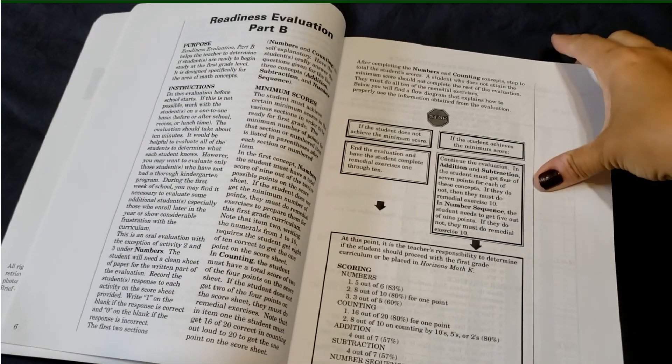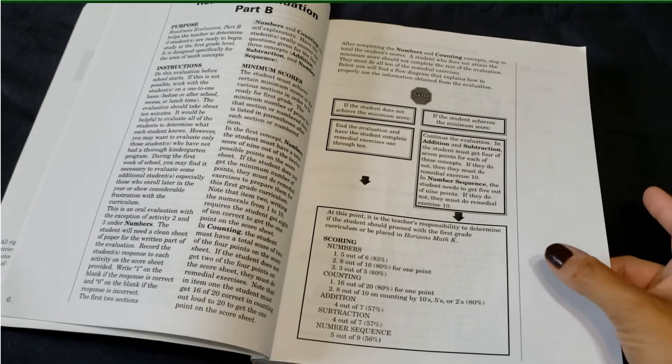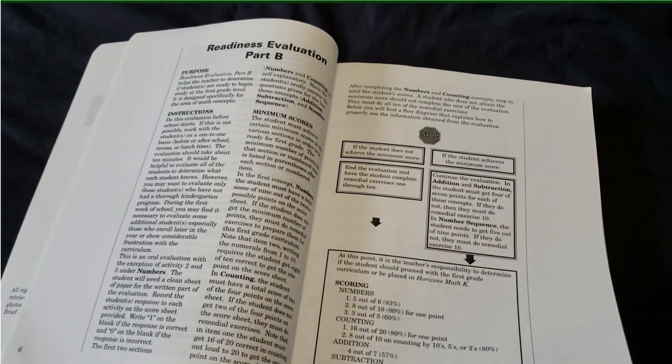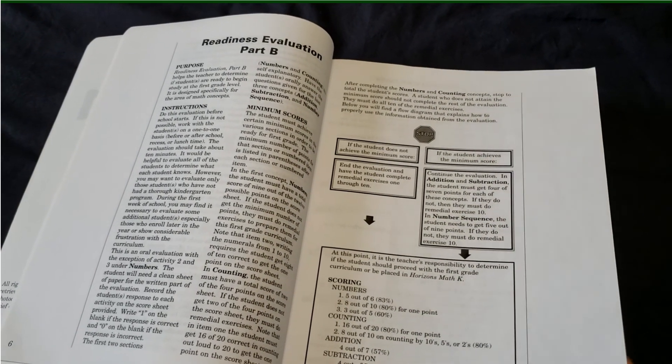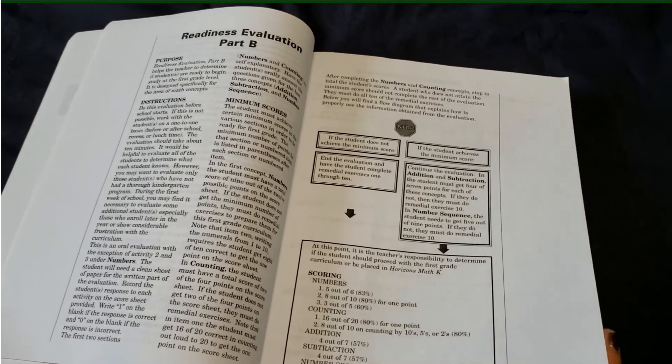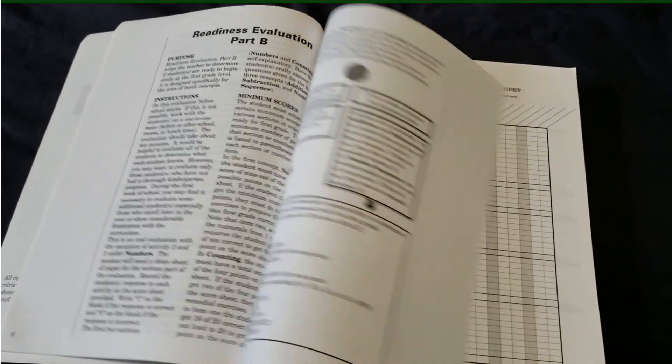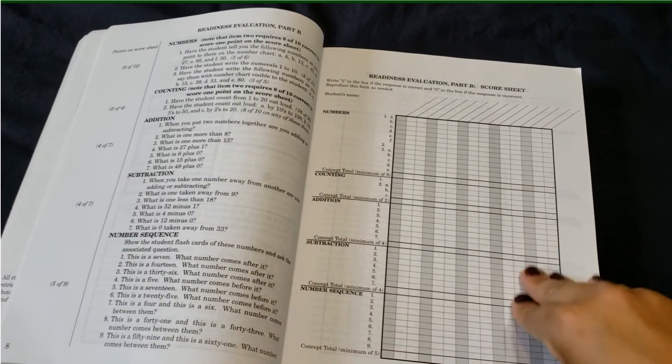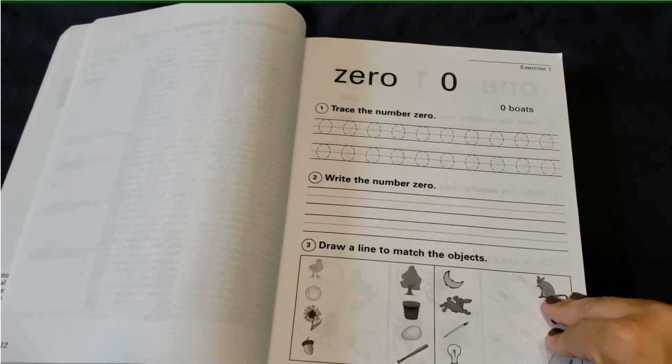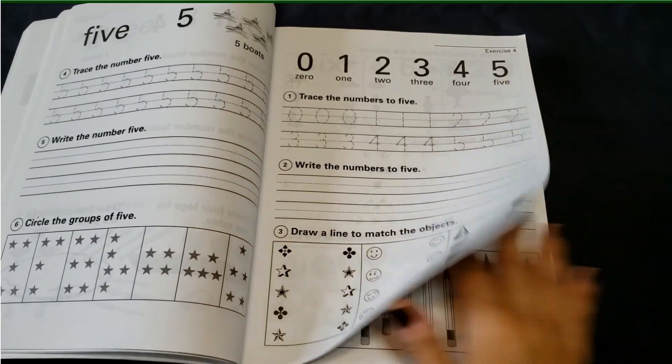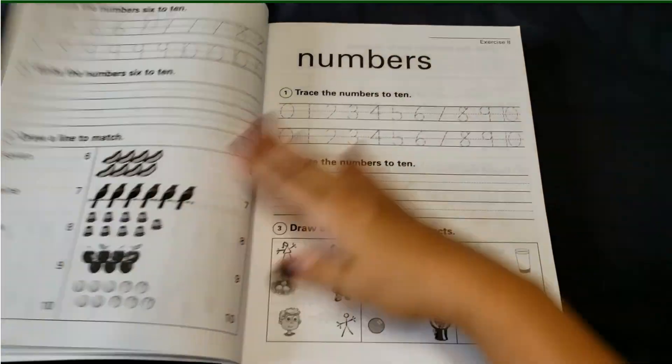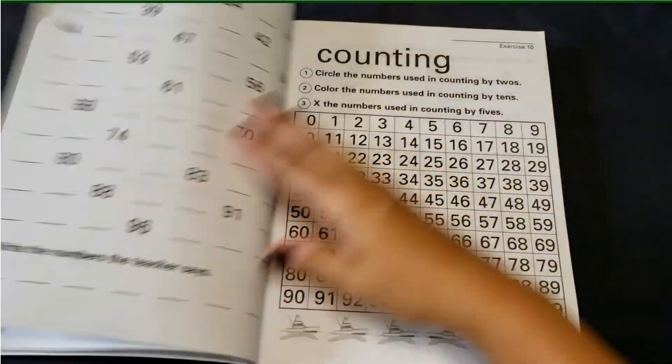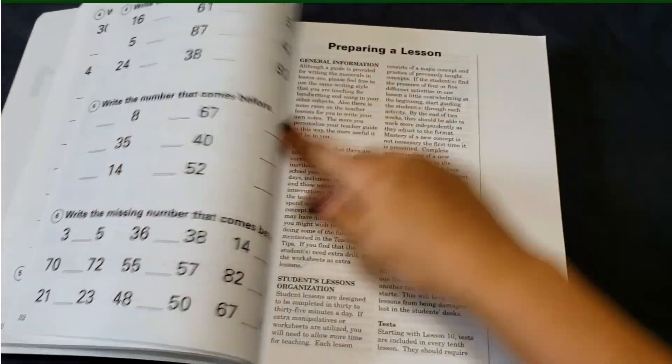So lots of great ideas and helps within that first section. Then it goes into readiness kind of evaluations. It explains why that would be important and how it could help you as far as getting ready to begin this curriculum. And then the score sheets and exercises to follow.